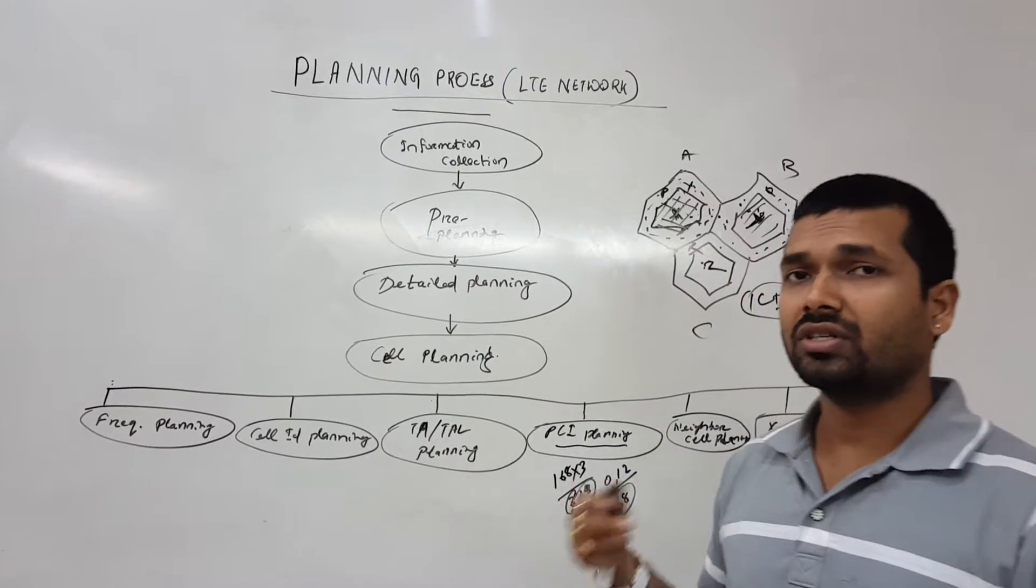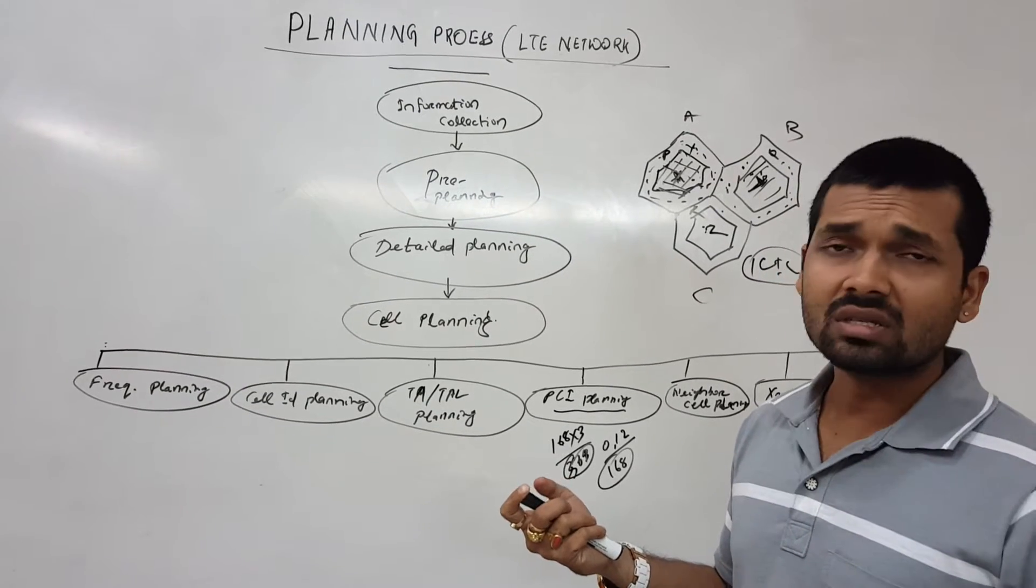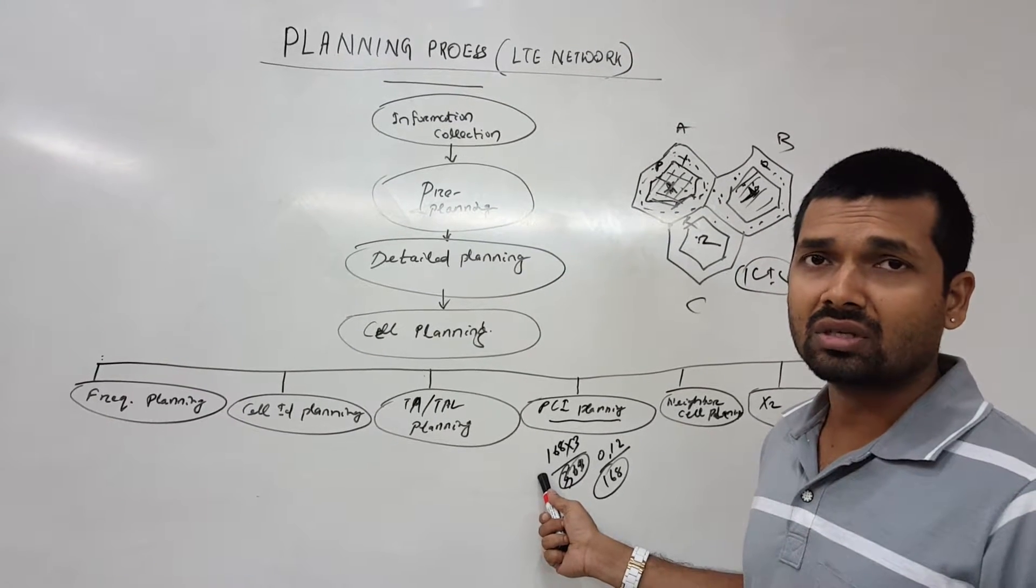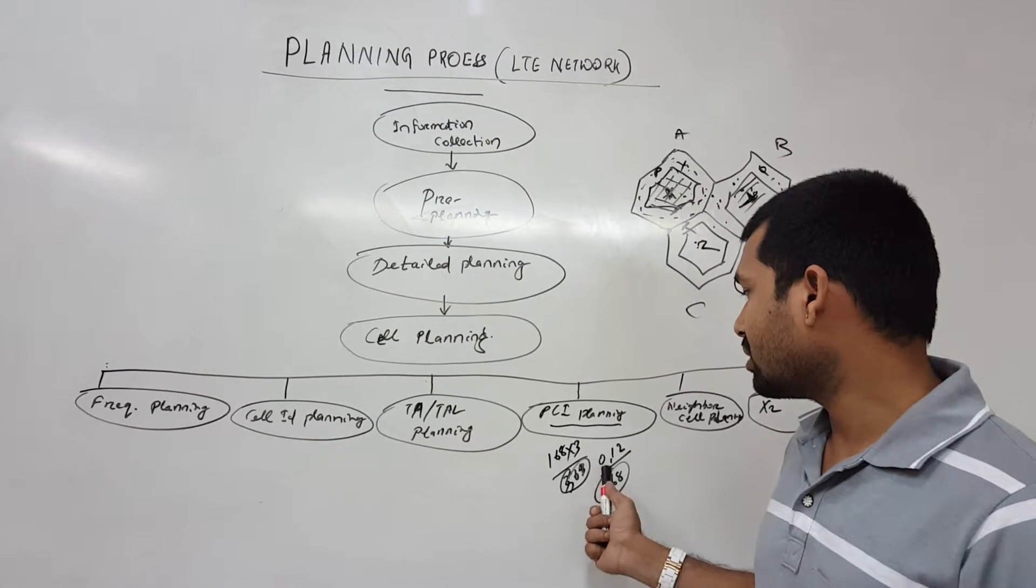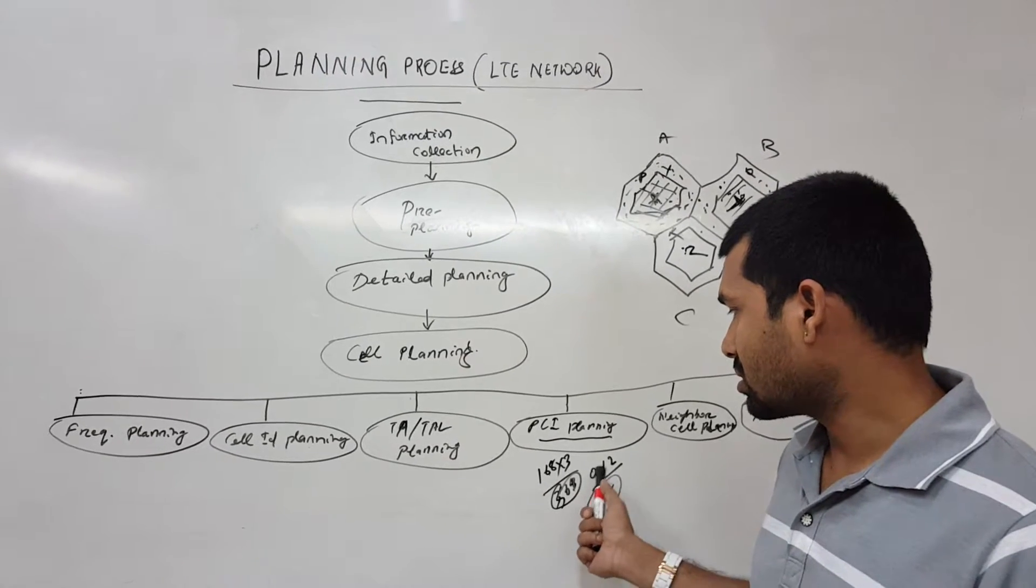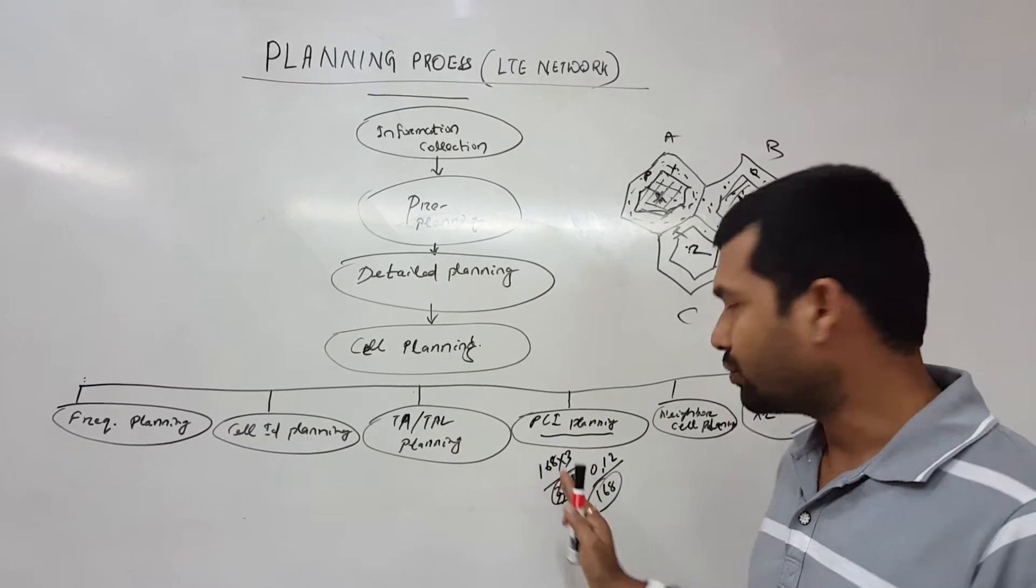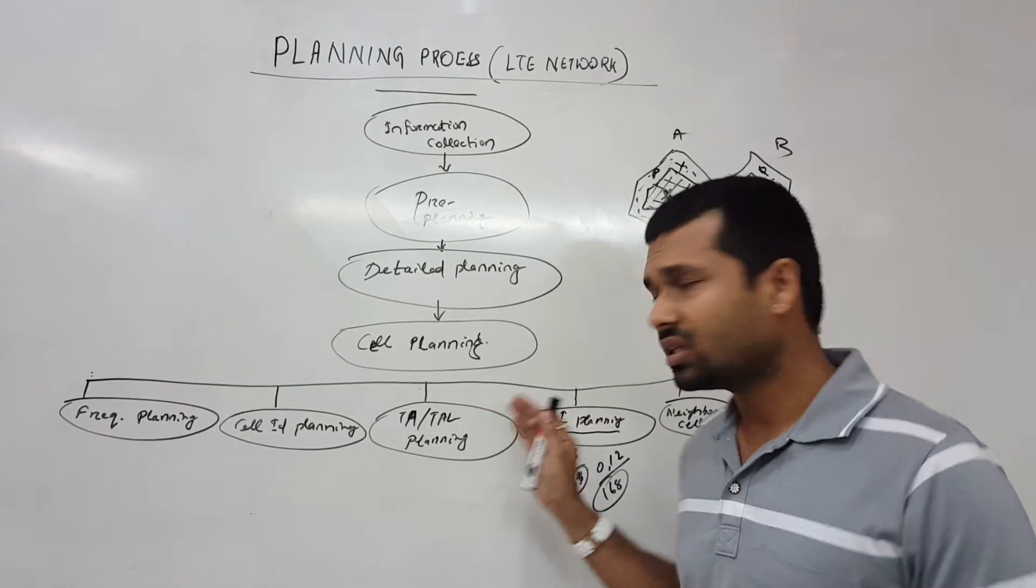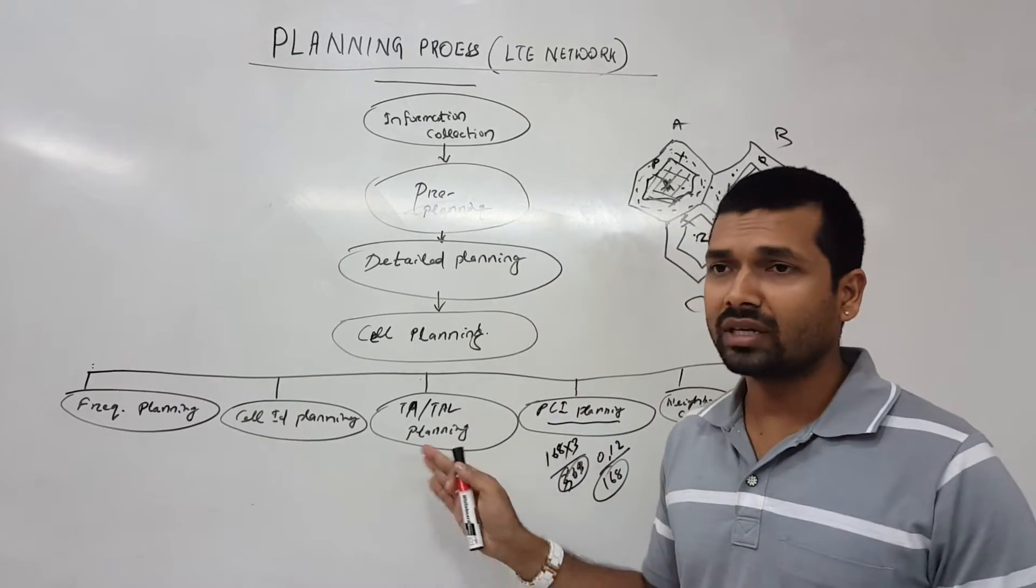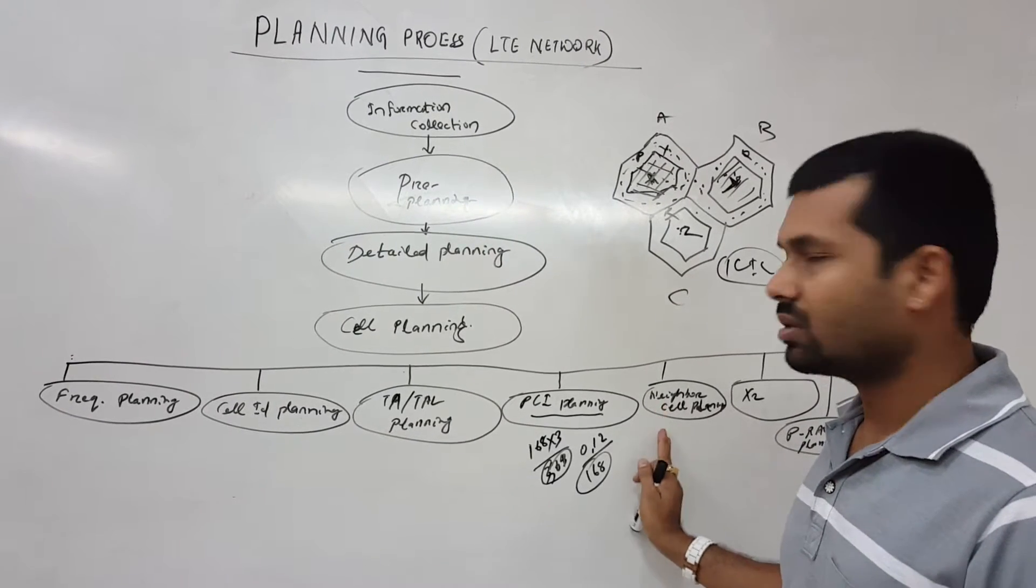When we do the initial cell search procedure, I hope you already remember that we have a different video for the initial cell search procedure. When we find the group in the secondary synchronization signal and the primary, we get the cell ID: 0, 1, 2, or which group does it belong. So we need to plan the physical cell identifier, the PCI. We need to do the planning. There are so many other stuff in the PCI planning also.